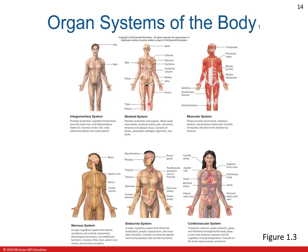The second is the skeletal system. It provides protection and support, allows body movements, produces blood cells, and stores minerals and adipose tissues. This includes bone, cartilages, ligaments, and joints. Another system that works with the skeletal system for body movements is your muscular system, which also maintains posture and helps in the production of body heat.